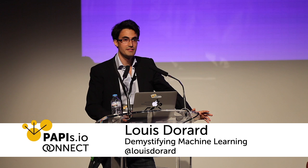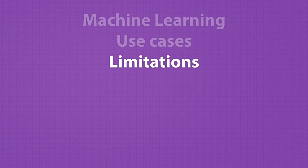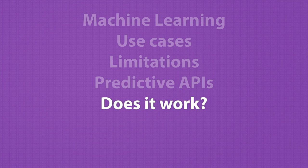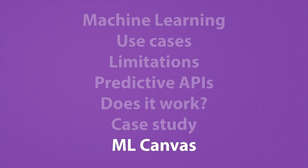This keynote is Demystifying Machine Learning. I'm going to start with explaining what machine learning is, then go over a few use cases. I'll talk about the limitations inherent to these techniques, then explain briefly what predictive APIs are and what they are changing. Then we'll see how we can measure that these techniques work, and finally a few words about the machine learning canvas.